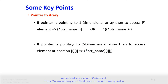If a pointer is pointing to a one-dimensional array, then to access the ith element of that array, the syntax used is: (*PointerName)[i], or equivalently *((*PointerName) + i).